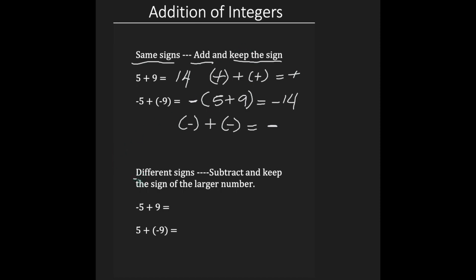When your signs are different, meaning you have a positive and a negative, the rule states that you must subtract and keep the sign of the larger number. So here I have negative 5 plus 9. The 5 is negative and the 9 is positive. Your signs are different, so you're going to perform a subtraction — big number first, small number second. Next, you're going to look to see who's the larger number. In our case it's the 9. The 9 is positive, so our answer will be positive 4.